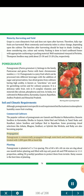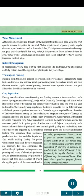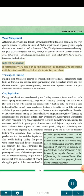Propagation: Pomegranate is commercially propagated through semi-hard and hardwood cuttings treated with 1000 ppm IBA basal dip. Planting: Pomegranate is planted at 5×5 meters spacing. Pits of 60×60×60 cm size are dug about one month before planting and filled with topsoil, pond silt and FYM mixture in 1:1:1 proportion, adding 50 g methylparathion to protect them from termites. Rainy season is the best time for planting. Water Management: Although pomegranate is a drought-hardy fruit plant, assured irrigation is essential for good yield and fruit quality. Water requirement largely depends on the desired Bahar. For Ambe Bahar, 13 irrigations are considered enough; for Mrig Bahar, 9 irrigations are found to be sufficient. In Ambe Bahar crop of Ganesh, regular irrigations from March to July at 7 to 10 days interval increased the fruit yield. Nutrient Management: Yearly dose of 10 kg FYM along with 125 g nitrogen, 50 g phosphorus and 50 g potash should be applied per plant up to 5 years of age. Training and Pruning: Multiple stem training is allowed to avoid shoot borer damage. Pomegranate does not require regular annual pruning; however, water sprouts, diseased and pest-affected or dried branches should be removed.